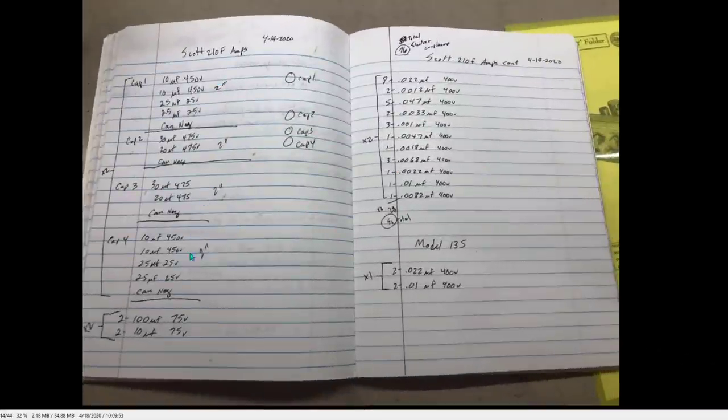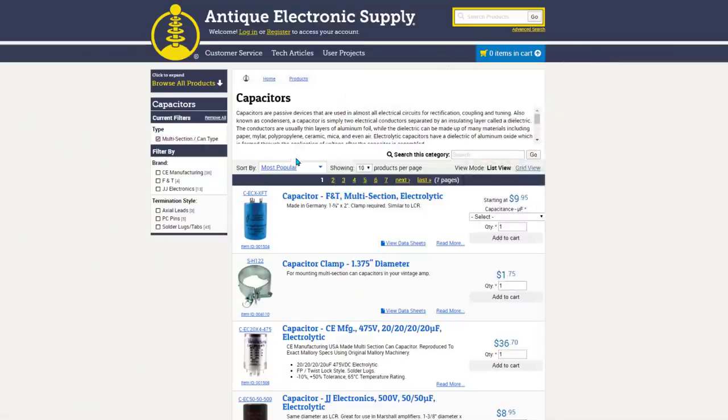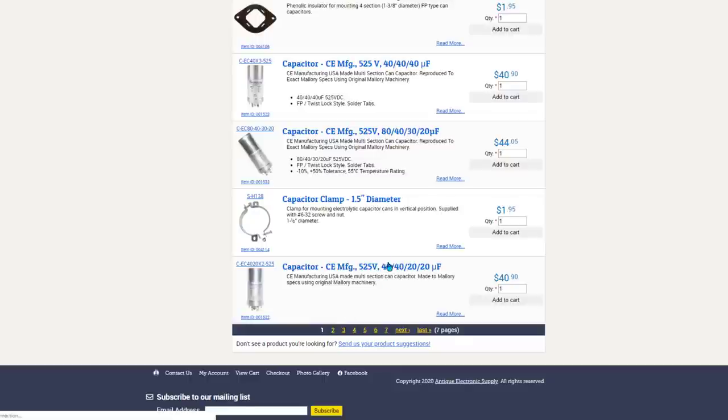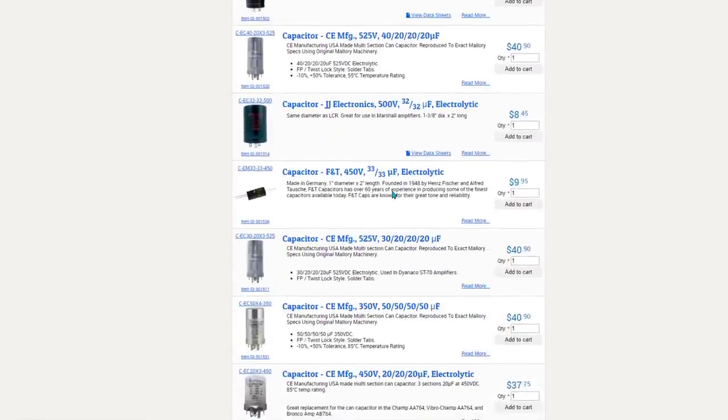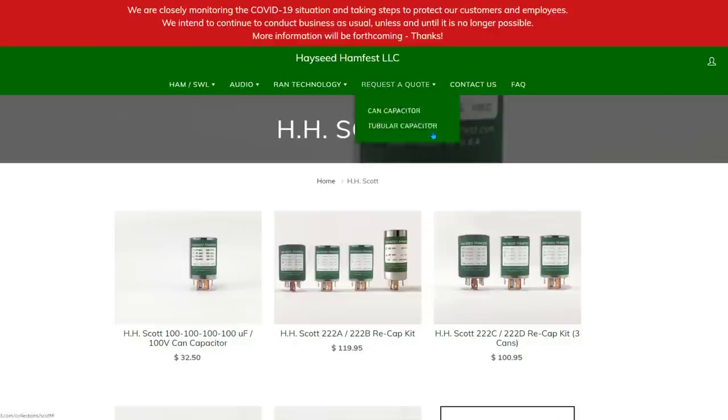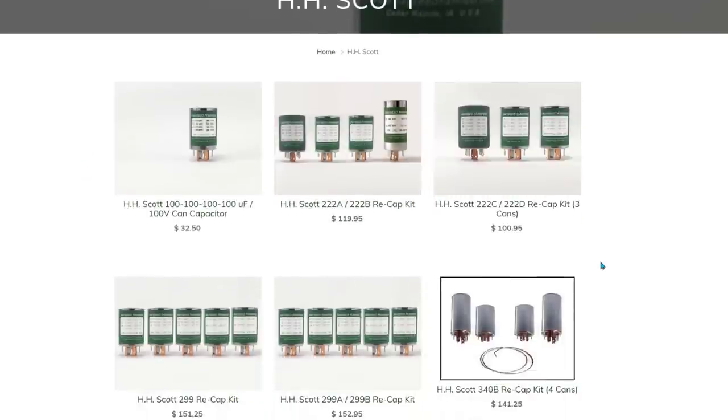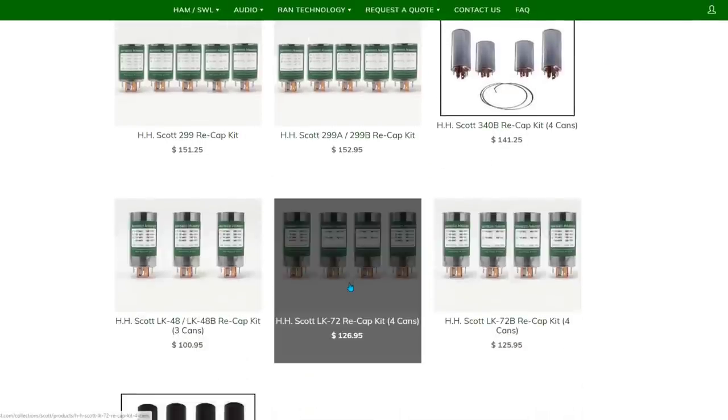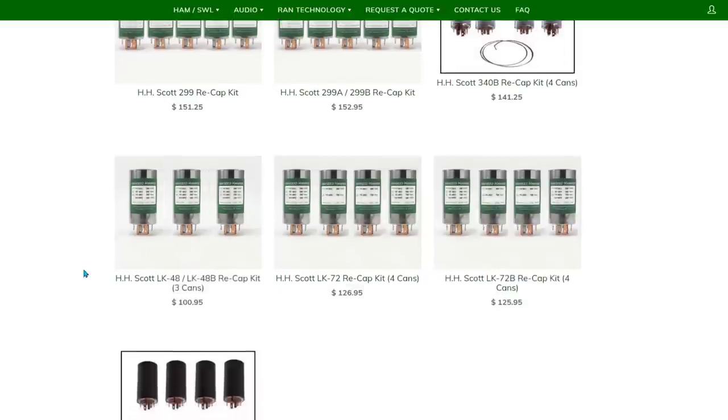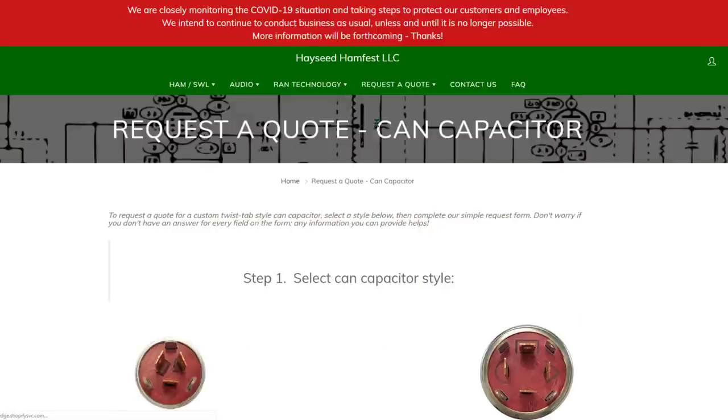Okay. And last here, what I needed for the can caps in this unit. I did, I took two routes. One, I went to antique electronic supply and sorted through all their existing capacitors here to see if I could find something that would match and not have to have something custom made. It turns out I could not find anything to do that with. So I ended up over here on Hayseed Hamfest website and they've actually got, if you go to audio HHScott here, they've got some pre-made units, but as we know, these 210Fs are pretty rare. So they don't have it listed, but I checked out all the ones they had just to make sure that the 210F wasn't the same as maybe an LK72B or whatnot. Turns out it was not the case. So what I need to do then is I need to come over here and basically request a quote.